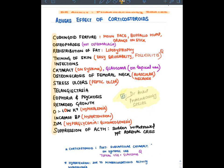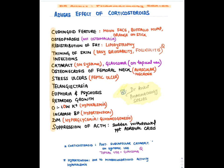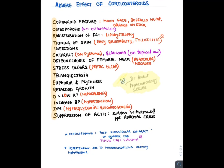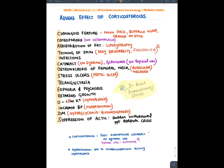Other Cushing syndrome features: cataract on systemic use (topical use causes glaucoma), avascular necrosis or osteonecrosis of the femoral neck, stress ulcer, telangiectasia due to skin thinning, euphoria and frank psychosis, retarded growth, hypokalemia, and hypertension due to mineralocorticoid action. Glucocorticoids cause gluconeogenesis leading to hyperglycemia, so they should not be given to diabetic patients.